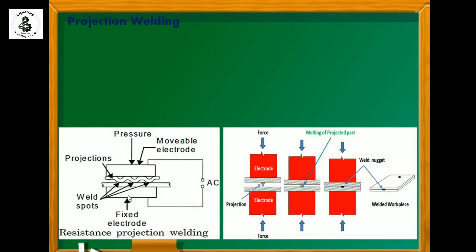In a projection welding process, AC power supply is being used. One terminal of the AC power supply is connected with a movable electrode and another terminal is connected with a fixed electrode. As per the requirements of the thickness of sheet metals, it can be easily adjusted. In projection welding, there will be predetermined projections onto the sheet metals — you can make a shape according to those points, or use projections to make contact with both plates.